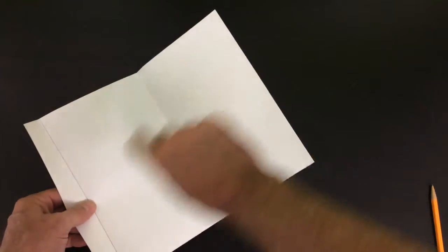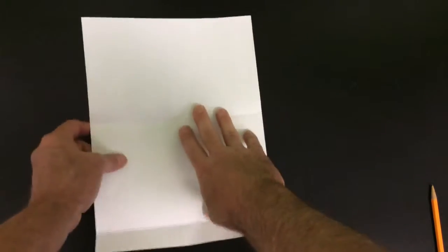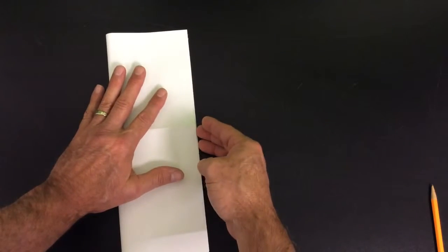Once you have this part, it's easy to do the next part because you need four pieces for it. So just open it all the way up, turn it sideways like this, and then fold across all the way to the bottom.